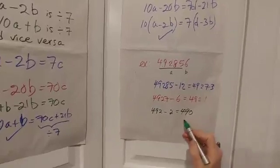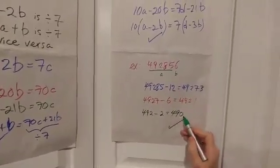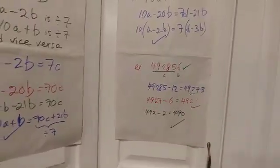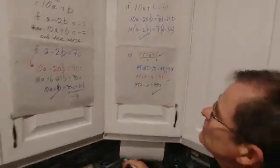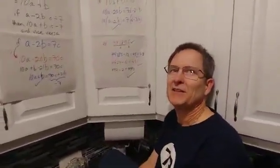And that's clearly divisible by seven because seven times 70 will give you 490. So that must be divisible by seven, that must be divisible by seven, and that must be divisible by seven according to the rule. Isn't that neat? Thank you very much.